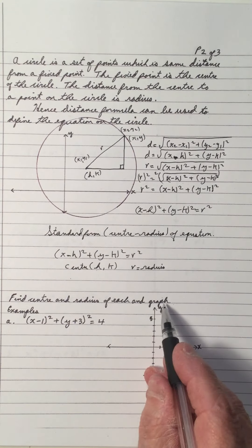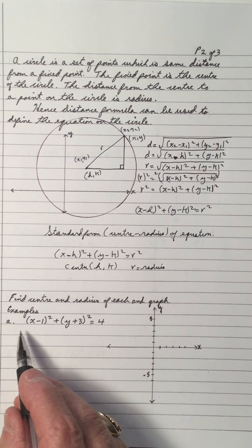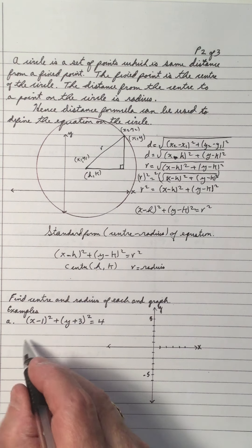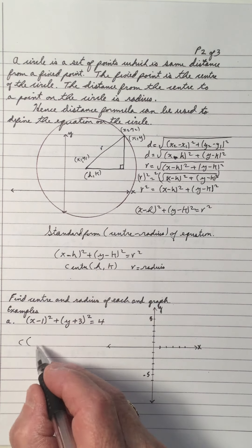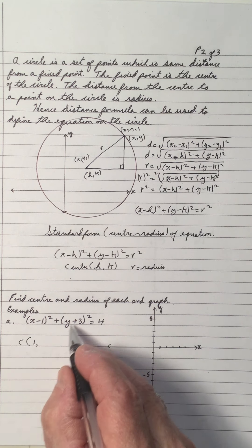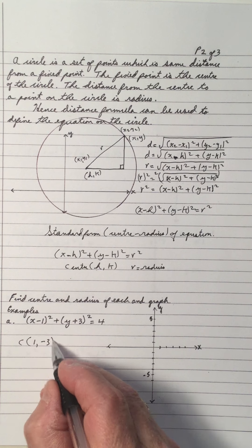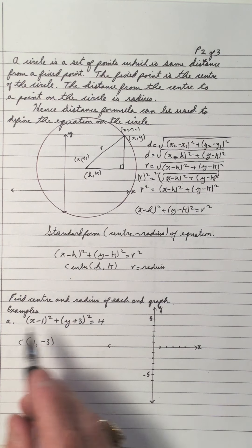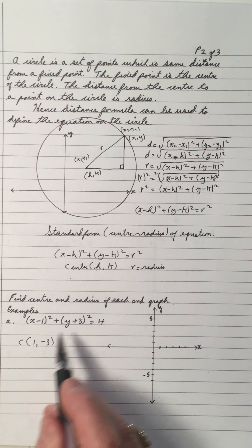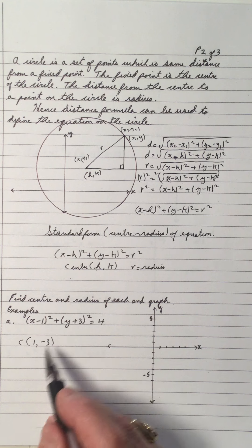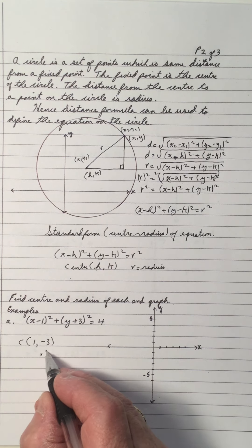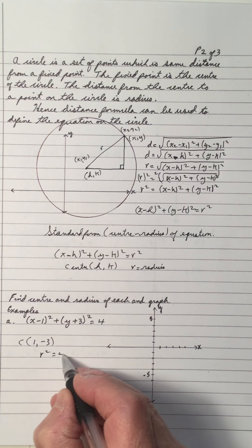Let's find the center and radius and graph. Here we have the equation (x minus 1) all squared plus (y minus 3) all squared equals 4. The center: opposite of negative 1 is 1, opposite of plus 3 is negative 3. Think of it this way — putting 1 in for x makes that zero, putting negative 3 in for y makes that zero. The radius: r squared equals 4.